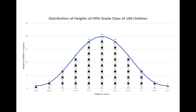Let me explain. The title tells us that the graph here represents 100 children in an imaginary 5th grade. We measured each child's height and found that, for example, one child was 50½ inches tall, and we placed that child at the far left side of the bell curve. We then found that two children were 50¾ inches tall, and we placed them on top of each other, and so on. We also found that 20 children were 52 inches tall, and in fact, 52 inches was the average height of all 100 children.